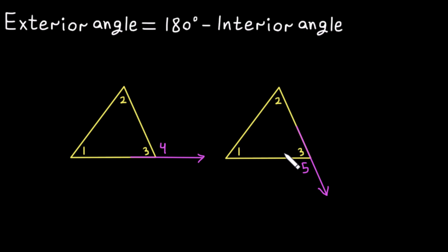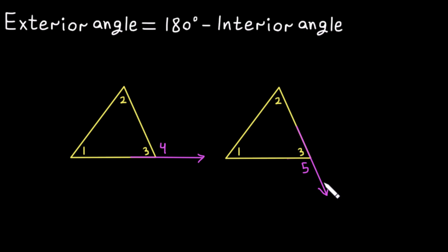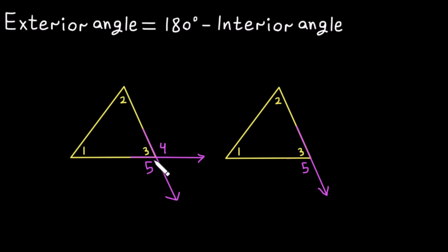Are these two exterior angles equal? They look different, but they are equal. You can pause this video and think about why. This is one exterior angle and this is the other exterior angle at the same vertex. Now I will extend this side and put these two exterior angles together to compare them. This here is angle five.